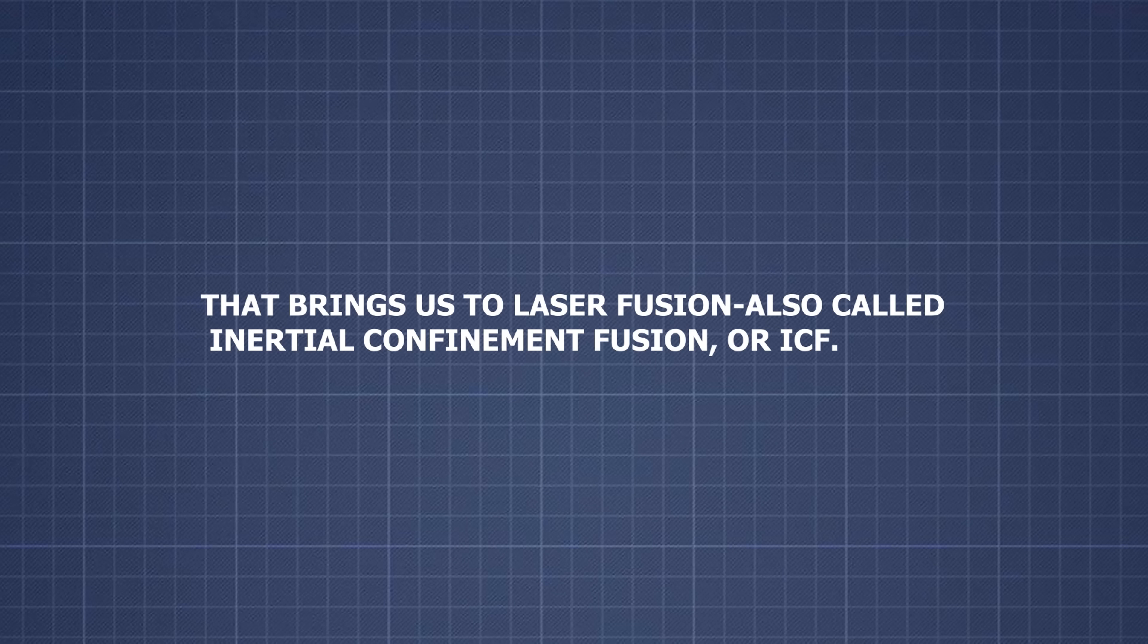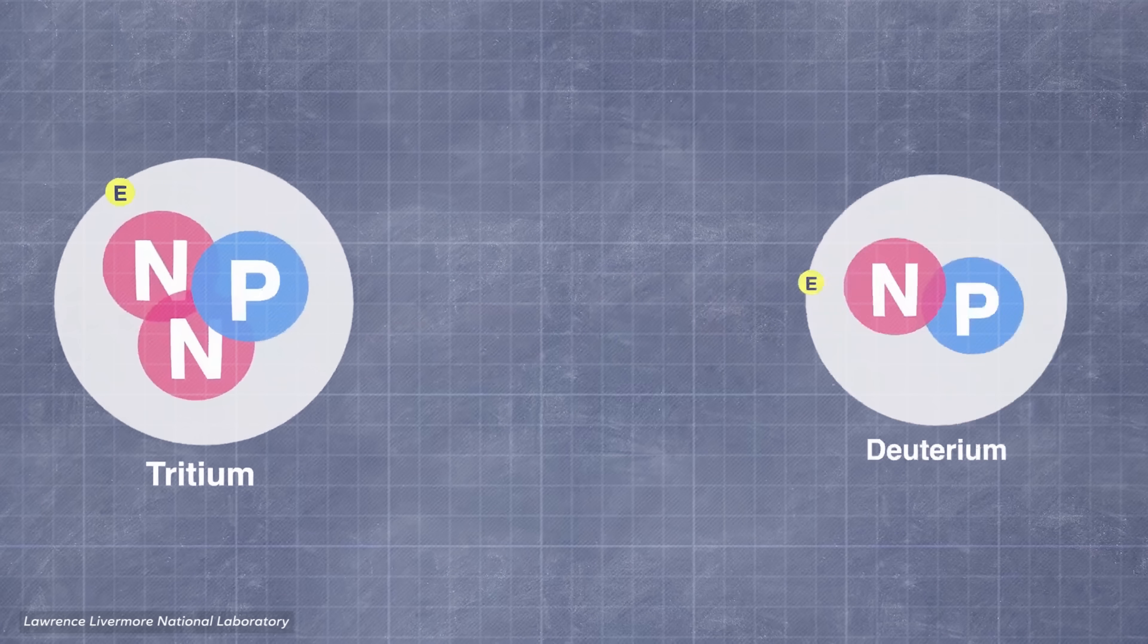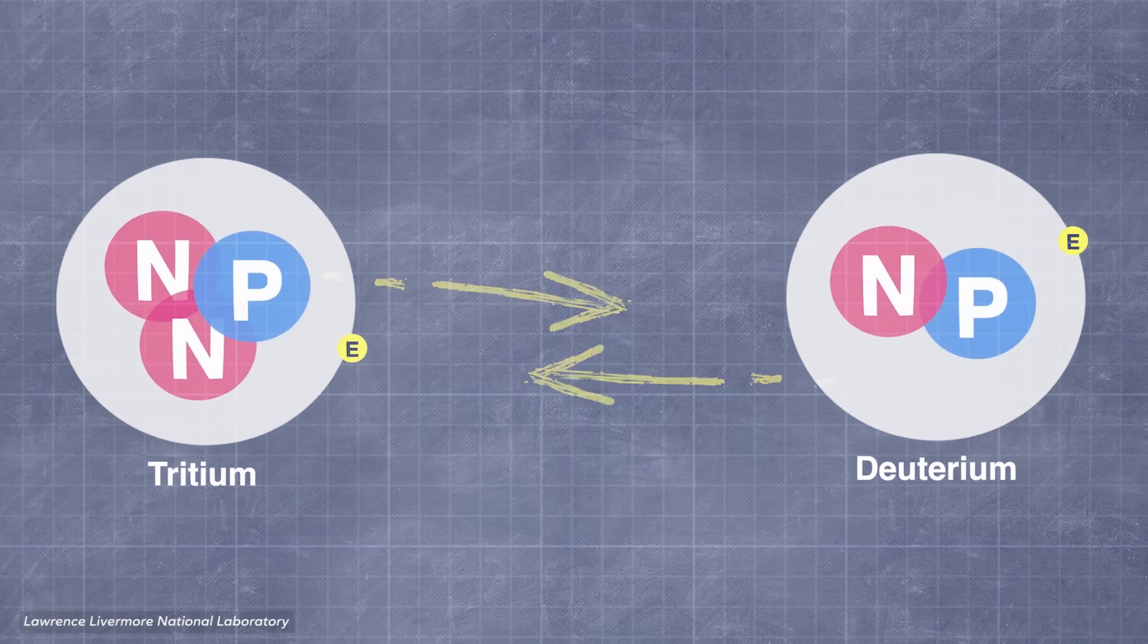That brings us to laser fusion, also called inertial confinement fusion, or ICF. Here's how it works. A tiny capsule filled with fusion fuel, usually deuterium and tritium, is placed inside a chamber.